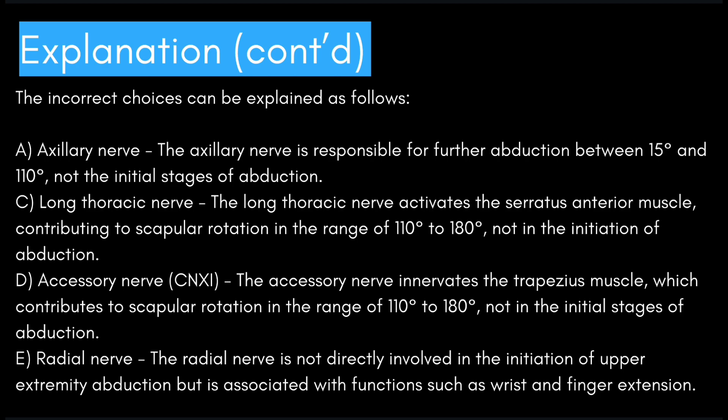Let's see why the other answer choices are incorrect. Axillary nerve: the axillary nerve is responsible for further abduction between 15 and 110 degrees, not the initial stages. Long thoracic nerve: activates serratus anterior, contributing to scapular rotation from 110 to 180 degrees, not initiation. Accessory nerve (cranial nerve 11): innervates the trapezius for scapular rotation from 110 to 180 degrees. Radial nerve: not directly involved in upper extremity abduction initiation; it is associated with wrist and finger extension.